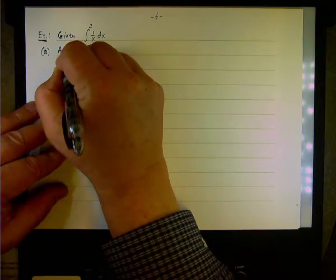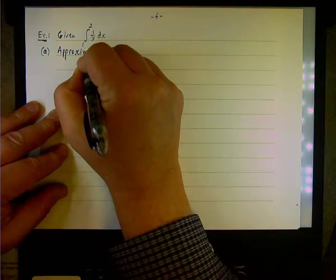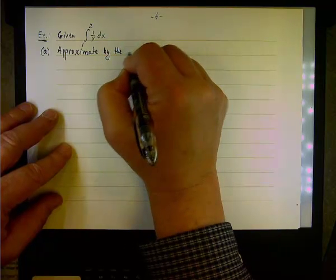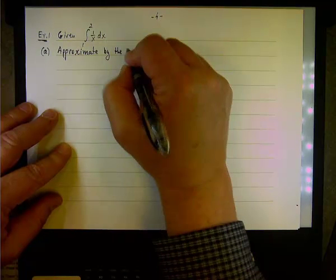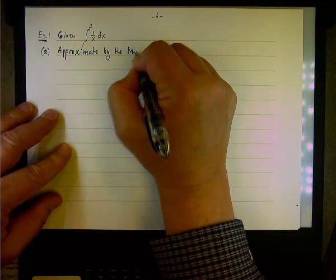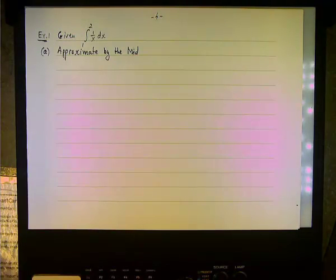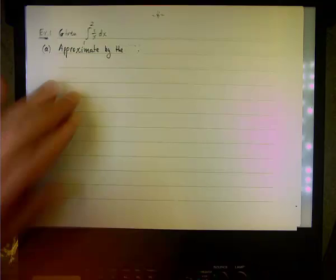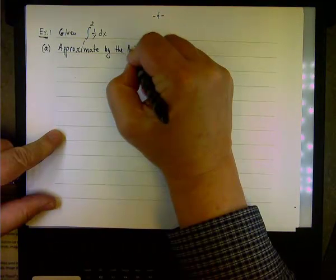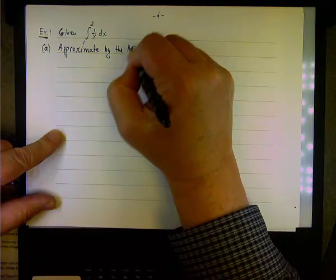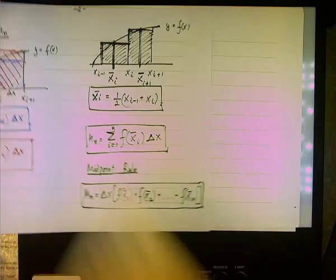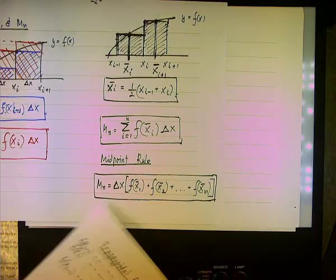First, we're going to approximate by the midpoint rule. To write it in short, instead of saying the midpoint rule, I'm going to write M sub 5. And we understand by that that we want the midpoint rule with 5 subintervals. Notice that before we wrote M sub n, so we give n a specific value for the midpoint.